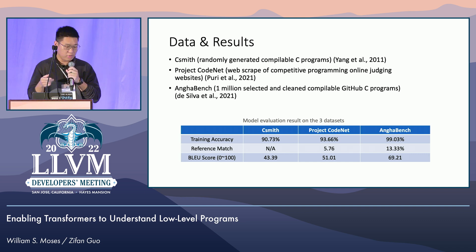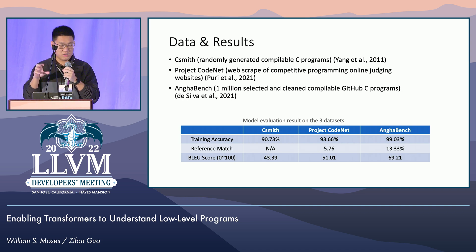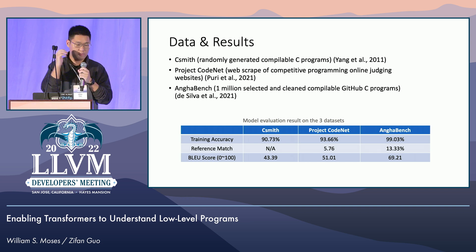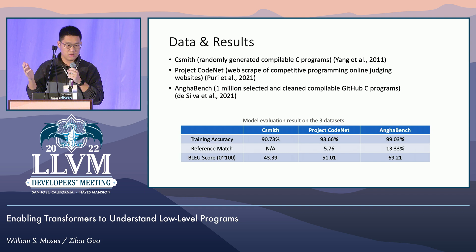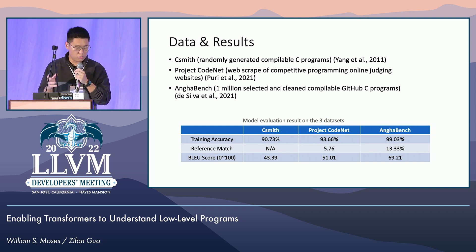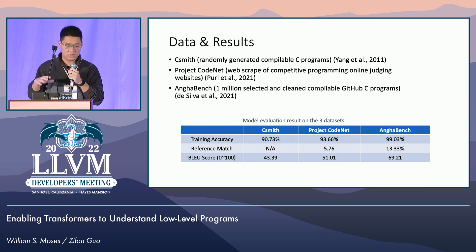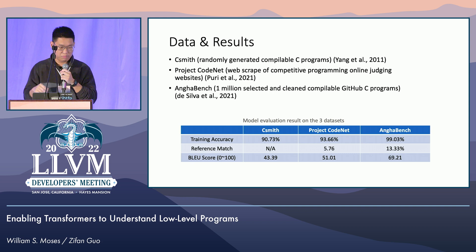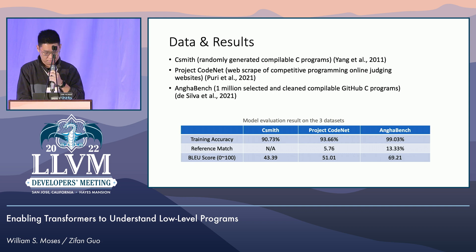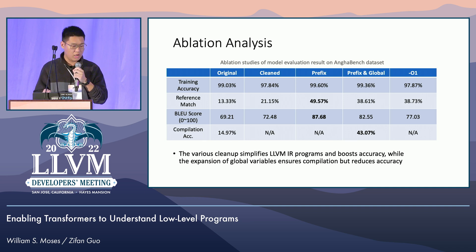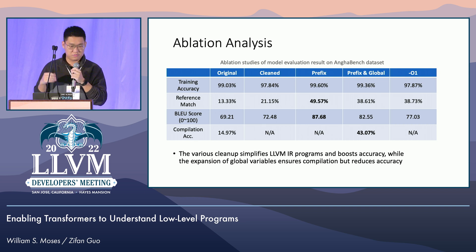We evaluate our model on a few different metrics. One is reference match, which is essentially the percentage of verbatim matches between our model's predictions versus the ground truths in the test dataset. BLEU score is a gold metric in the field of natural language processing that essentially takes a string of text and evaluates how different two strings are, and we take an average of all the BLEU scores collected from our test dataset. We also conducted ablation studies, which talk about our cleaning efforts of the LLVM language, and those have shown to be very successful — better than the original.